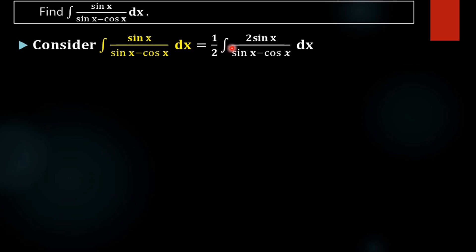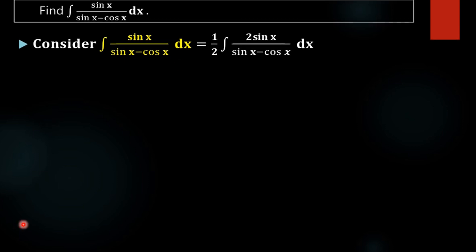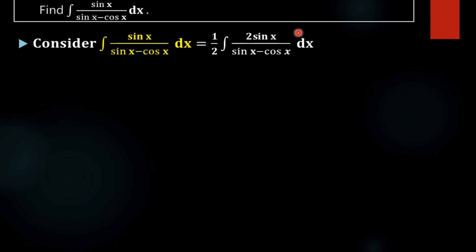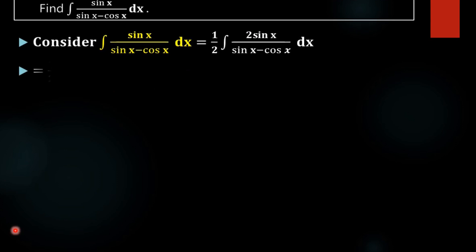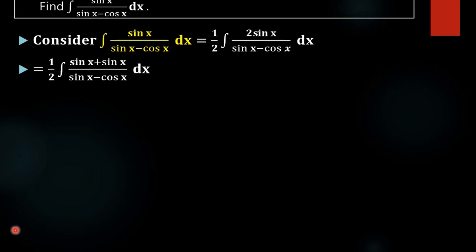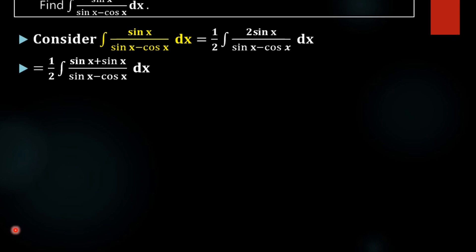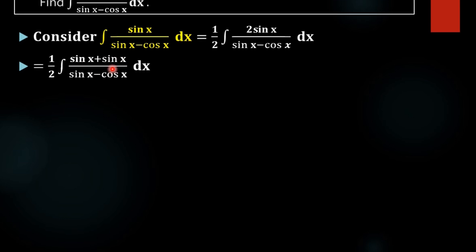As a first step, we are multiplying by 2 and dividing by 2. Then we have 2 sin x here. In the next step, we are splitting 2 sin x as sin x plus sin x divided by sin x minus cos x. We have sin x in the numerator, and in order to make changes in the function, we also need a cos x term.